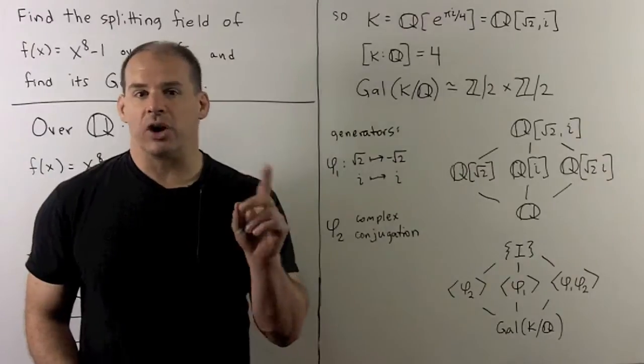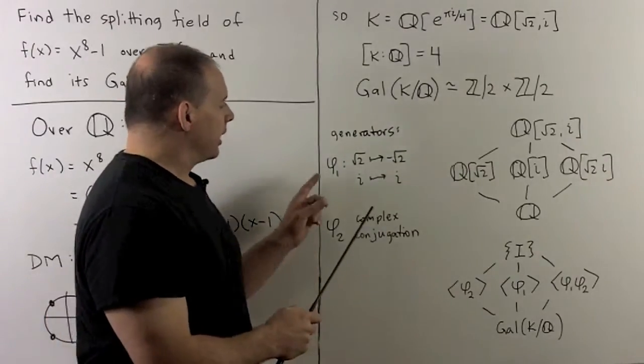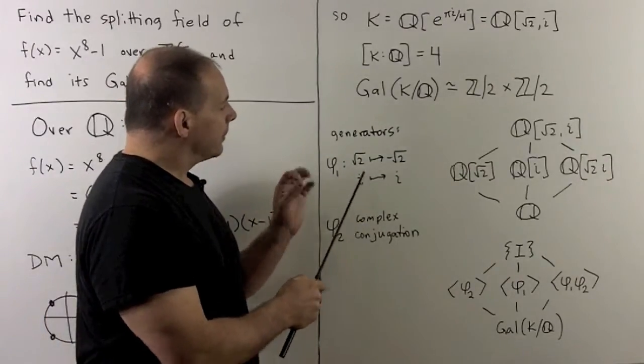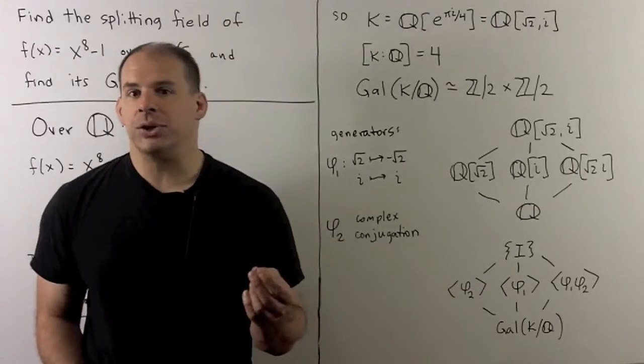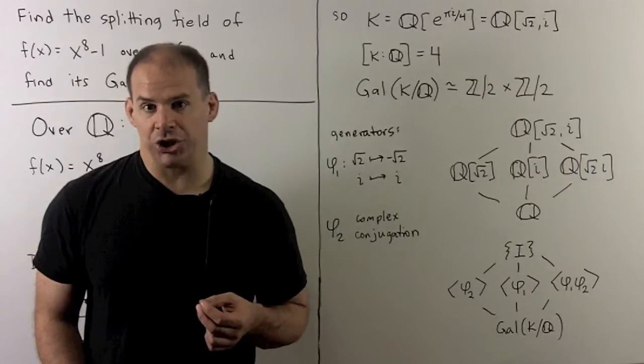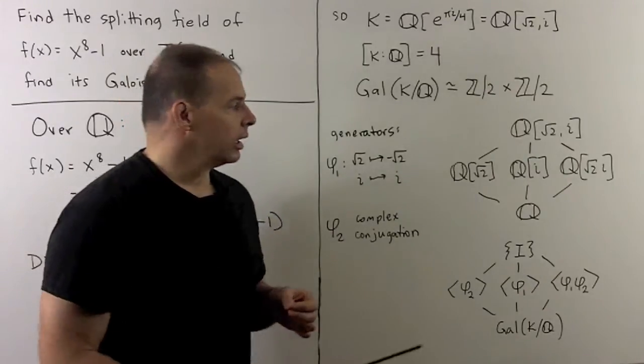See this? We know we have generators given by - I could take φ₁, this is going to send √2 to -√2, leaves i alone. Then for φ₂, we could just use complex conjugation.